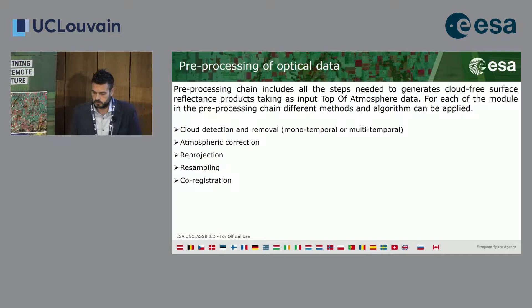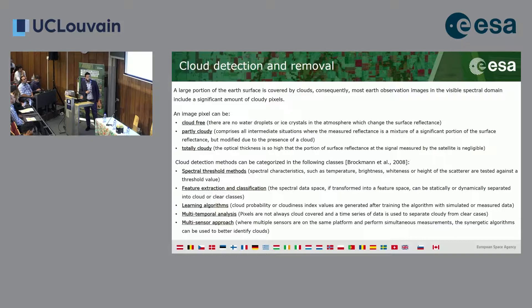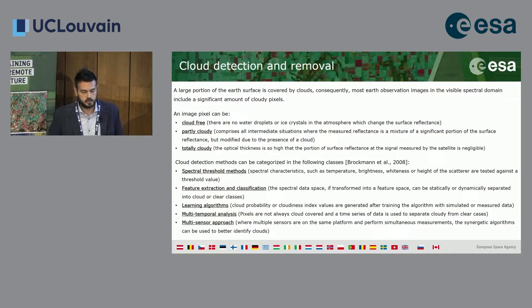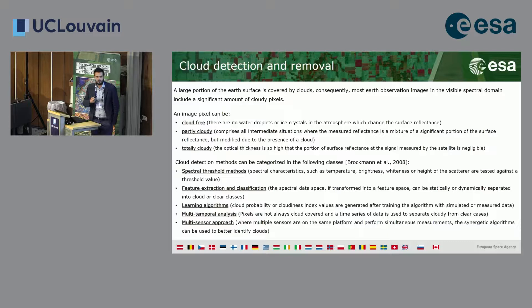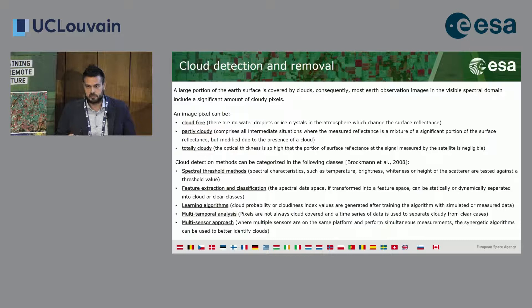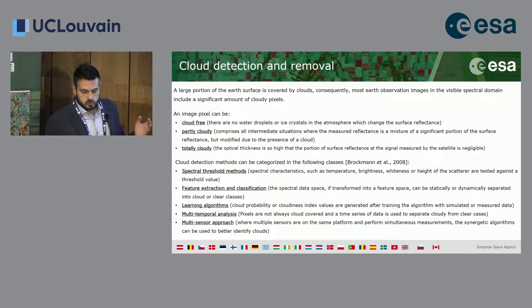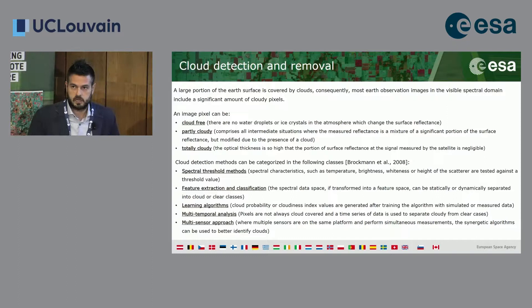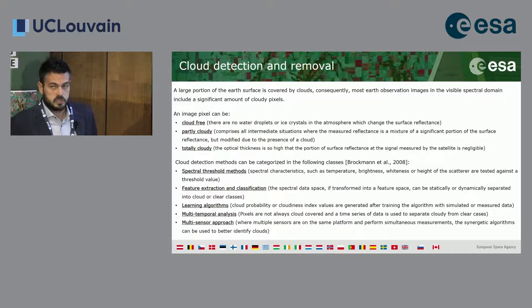A large portion of the Earth is covered by clouds each day, and three possible scenarios can happen: cloud-free pixels — lucky, especially in the Sahel belt where it's quite difficult — partially cloudy pixels, which are a mixture, and totally cloudy pixels. To detect and screen out clouds there are different methods: spectral threshold methods based on thresholds on spectral bands, feature extraction and classification learning algorithms, multi-temporal analysis as used in MAJA, and multi-sensor approaches.